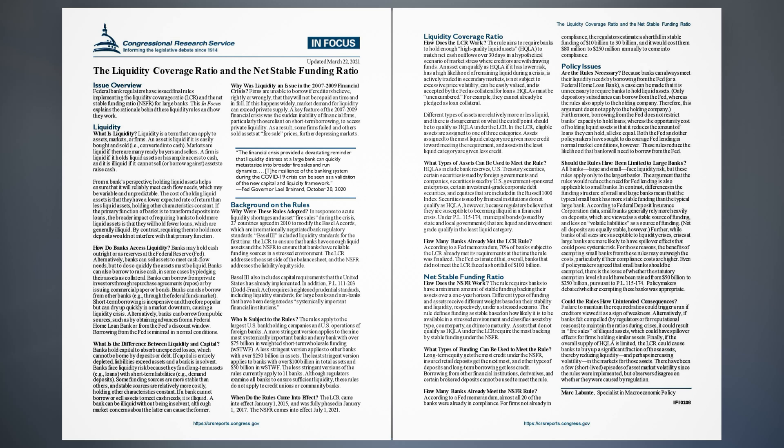Why was liquidity an issue in the 2007–2009 financial crisis? Firms are unable to borrow if creditors believe, rightly or wrongly, that they will not be repaid on time and in full. If this happens widely, market demand for liquidity can exceed private supply. A key feature of the 2007–2009 financial crisis was the sudden inability of financial firms, particularly those reliant on short-term borrowing, to access private liquidity. As a result, some firms failed and others sold assets at fire sale prices, further depressing markets. The financial crisis provided a devastating reminder that liquidity distress at a large bank can quickly metastasize into broader fire sales and run dynamics. The resilience of the banking system during the COVID-19 crisis can be seen as a validation of the new capital and liquidity framework.